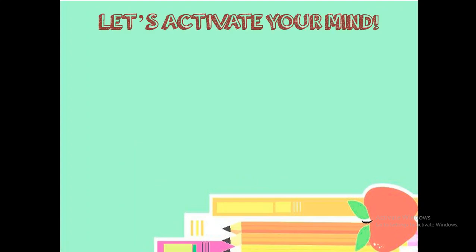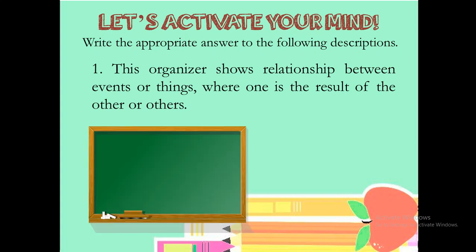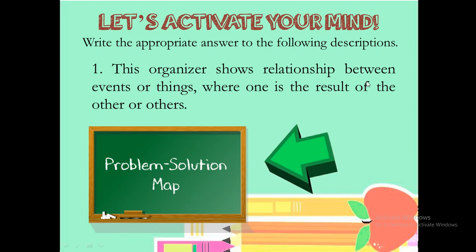Let's activate your mind. Please feel free to pause the video so that you can answer the questions with sufficient time. Question number one. This organizer shows relationship between events or things where one is the result of the other or others. What would be your answer on question number one? This organizer shows relationship between events or things where one is the result of the other or others. That's correct. The answer would be the problem-solution map. We have the clue here. Result.